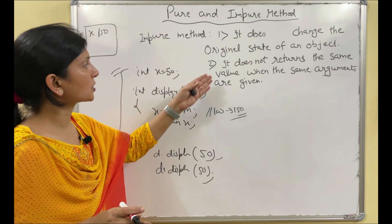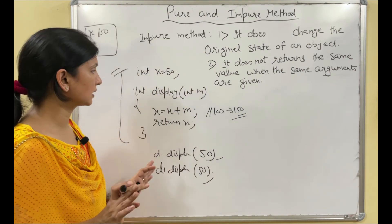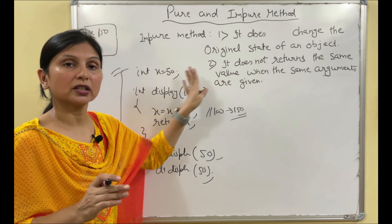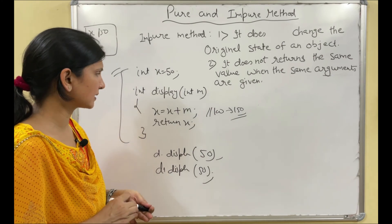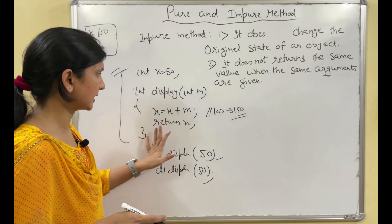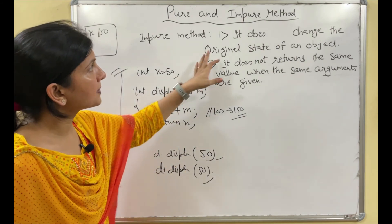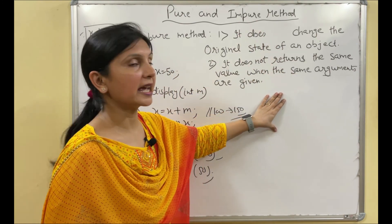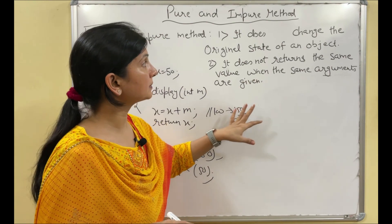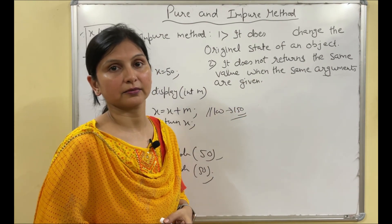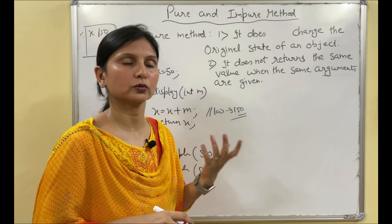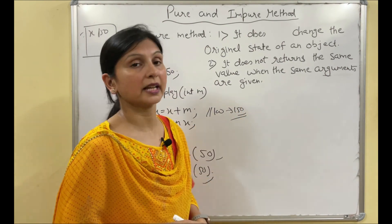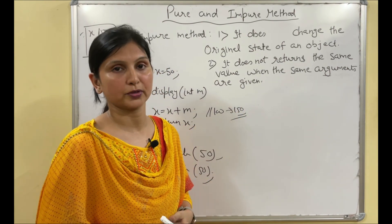For impure methods, you need to know the definition and one example — no programming is required. Pure methods have no side effects because they don't change the state of the object. Impure methods have side effects because they change the state. That's it. Thanks for watching.